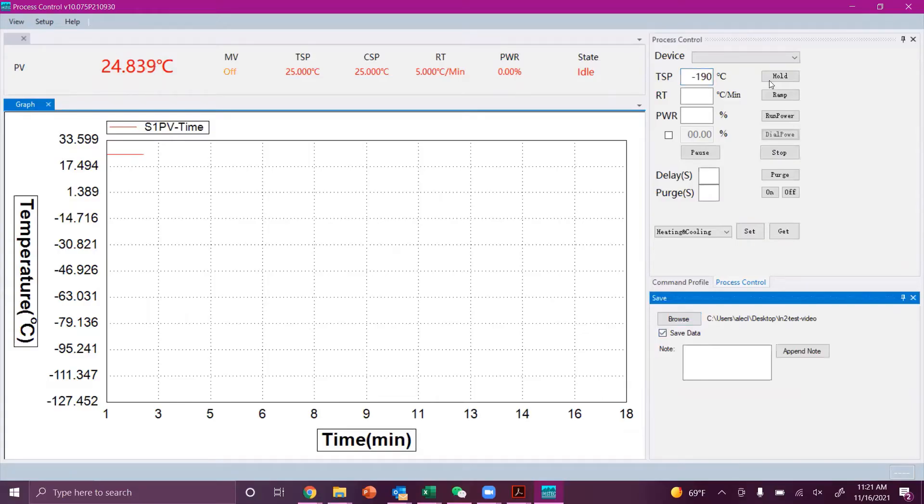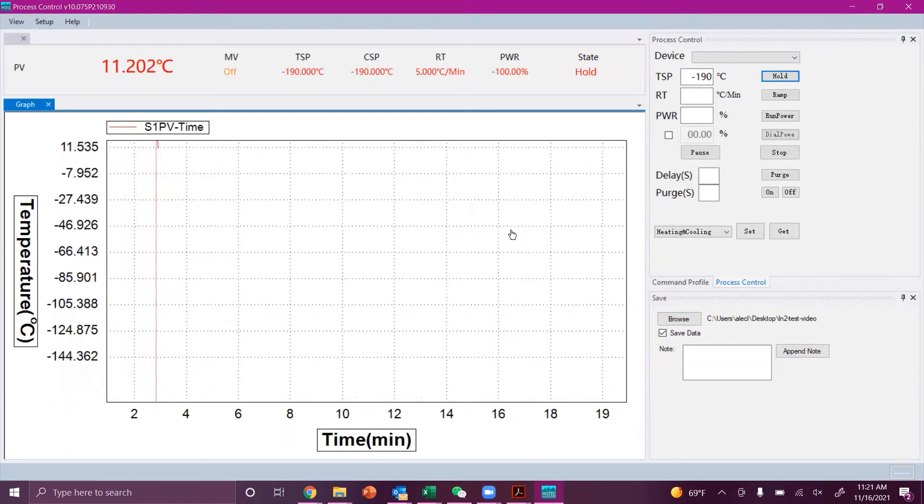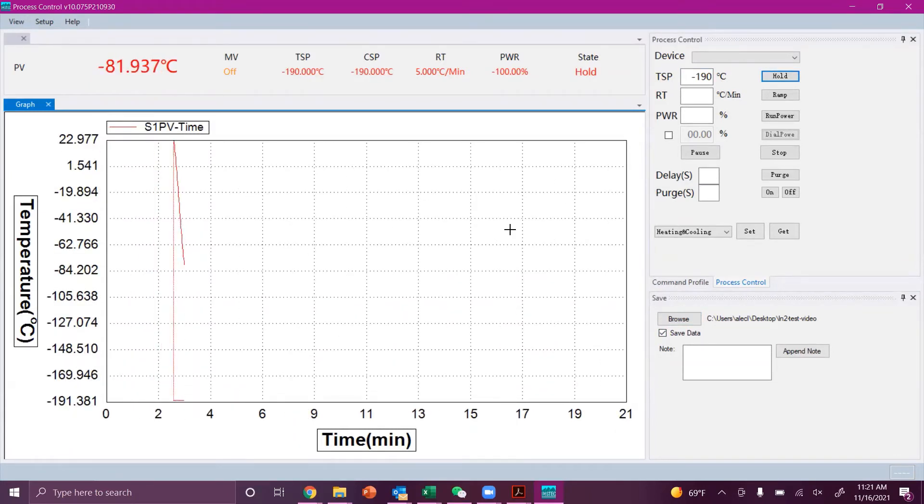You can send commands to the LN2 suction pump by using the INSTEC app software. Simply set your target temperature, in this case negative 190 degrees Celsius. You can press hold for the fastest cooling rates possible, or you can specify a ramp rate and press ramp for a slower, more controlled cooling rate.